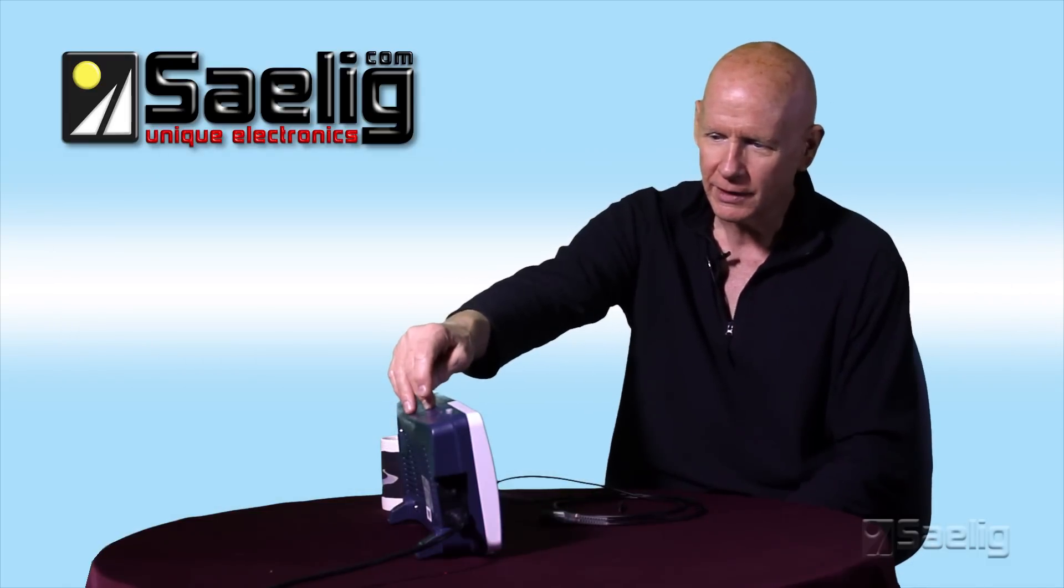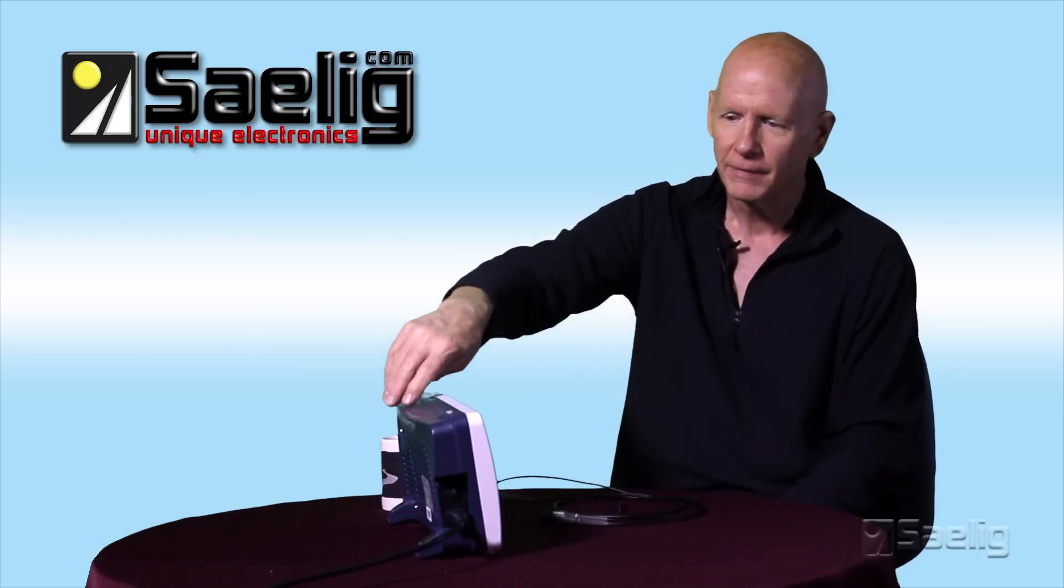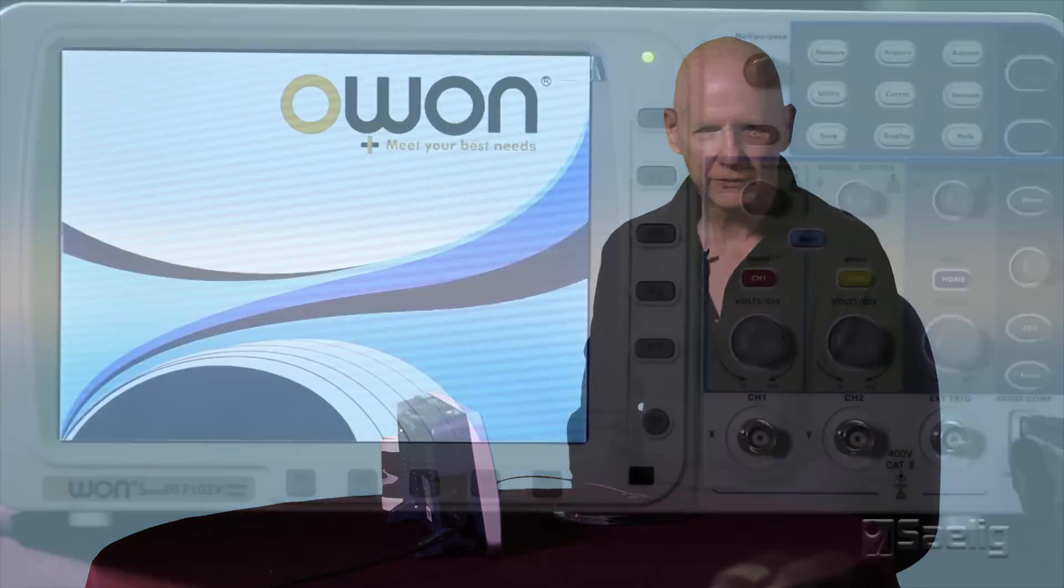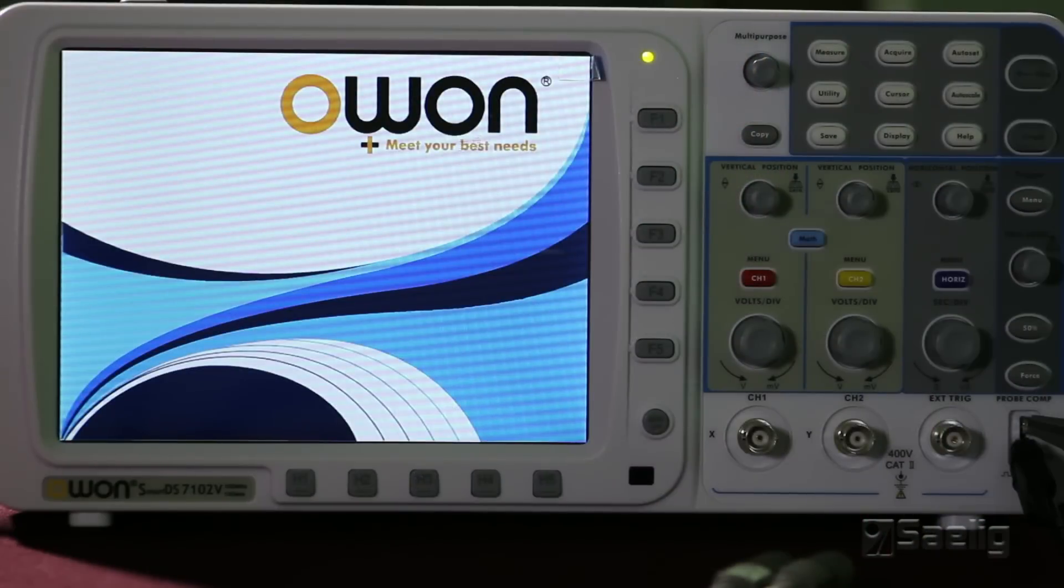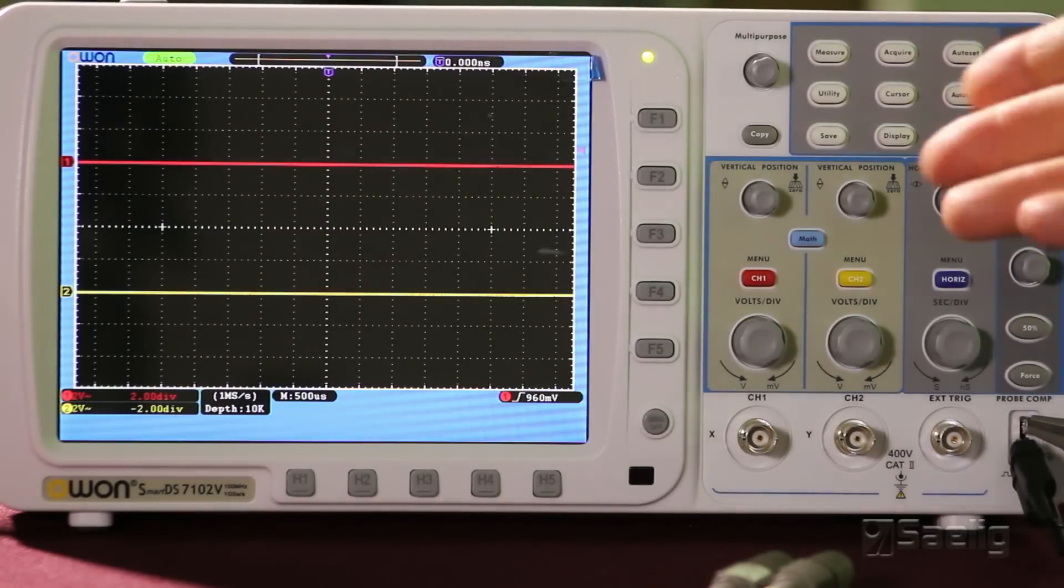So, this scope is brand new. Just came out of the box and the first thing we want to do is power it up and see how it runs through its own power on self-test or POST. And most scopes that we sell will have some kind of a splash screen like this that you see with, of course, the company logo on it and the model and some other fancy stuff. And it takes a few seconds for it to get through the thing and eventually develops the oscilloscope screen that you see here.